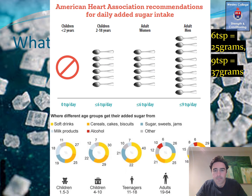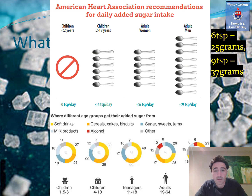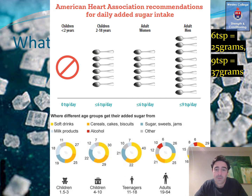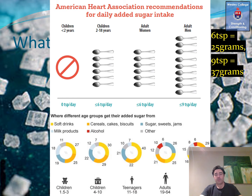Looking at the graph for teenagers aged 11 to 18: 40% of those people are drinking soft drinks laced with sugar, and another 22% are eating cereals, cakes, or biscuits. So 62% of their nutritional intake comes from sugar-laden foods. That's a real issue and something I just want to highlight — not scaremongering, but these are realistic figures.